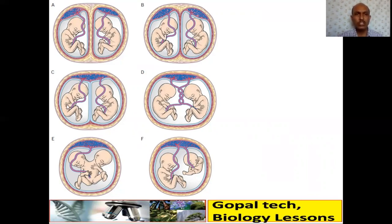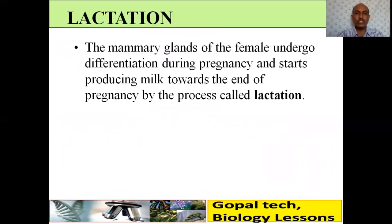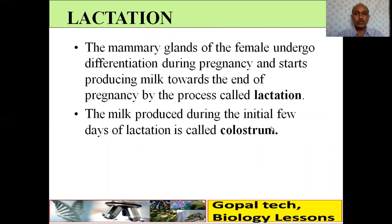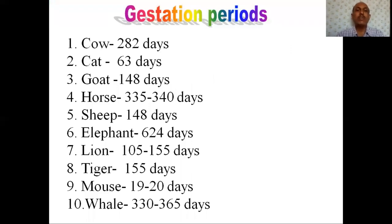Lactation: the mammary glands of the female undergo differentiation during pregnancy and start producing milk towards the end of pregnancy — a process called lactation. The milk produced during the initial few days (one or two) of lactation is called colostrum. It contains several antibodies like IgA, essential for developing resistance in the newborn — this is called passive immunization. There is also a question on the gestation period of different animals.